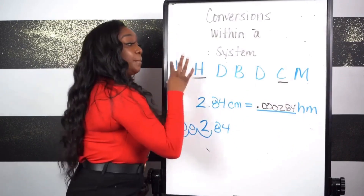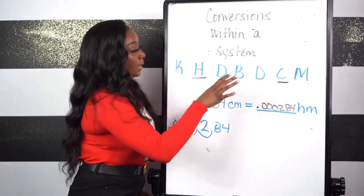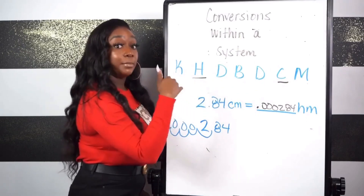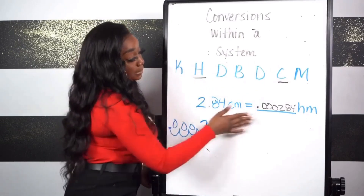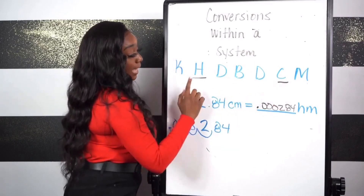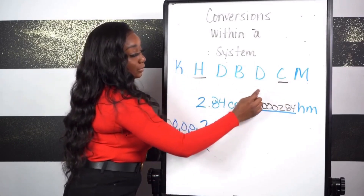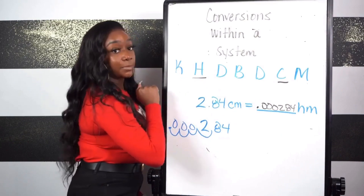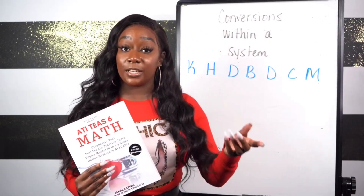As you can see, if you master this particular acronym, the only thing you have to do is move your decimal left or right depending on what you're converting from. In this instance, because we went from centimeters to hectometers, we had to move four spaces to the left. That concludes our review on conversions within a system.